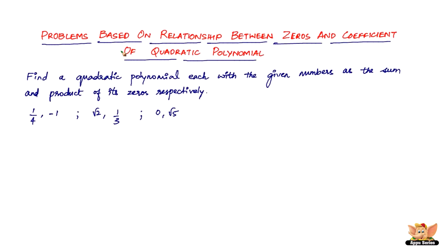In this video let us continue to solve problems based on the relationship between zeros and coefficients of a quadratic polynomial. We've got a problem here which says: find a quadratic polynomial each with the given numbers as the sum and product of its zeros respectively. The given sets of numbers are: one-by-four comma minus one, root two comma one-by-three, and zero comma root five.